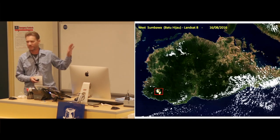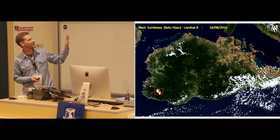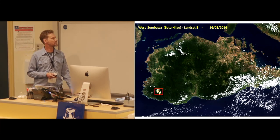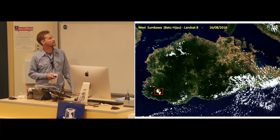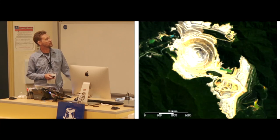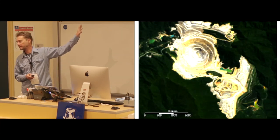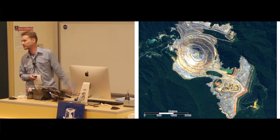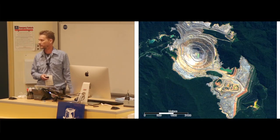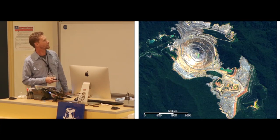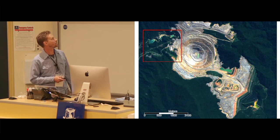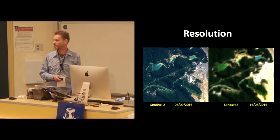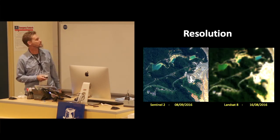Here's an example of the revolutionary datasets we're getting. This is a large gold mine in Sumbawa in eastern Indonesia. If we zoom in, that's Landsat scale imagery at 30-metre pixels. This is what we've got now every five days — the Sentinel-2 datasets — incredibly easy to access. We can zoom in once again to see just the comparison between the resolution of the two datasets.